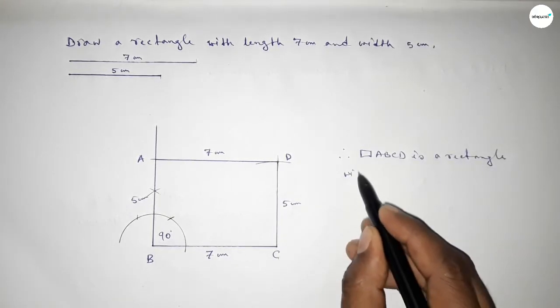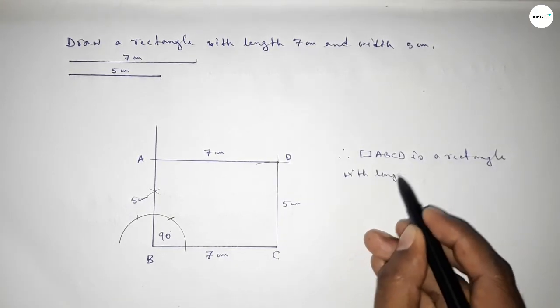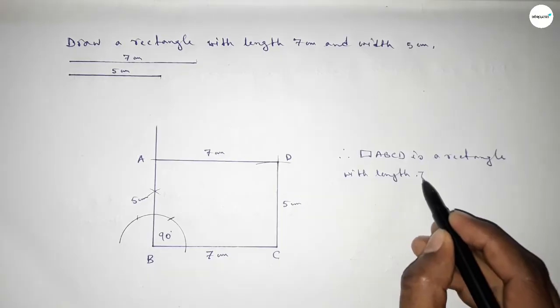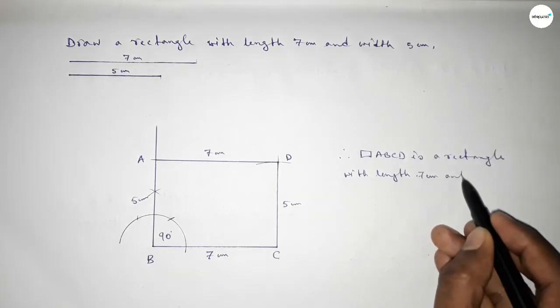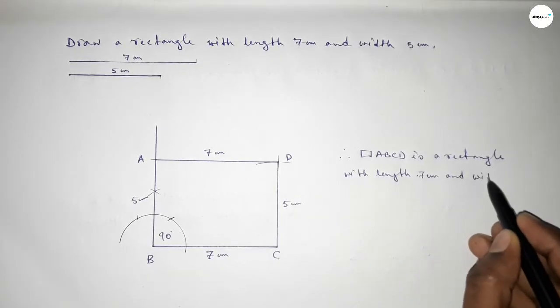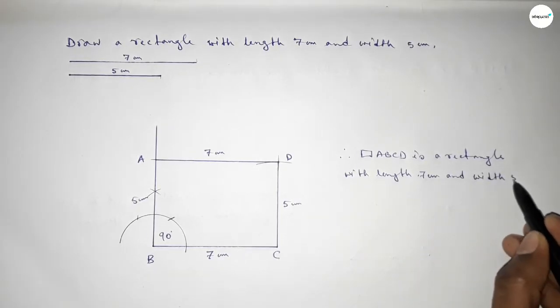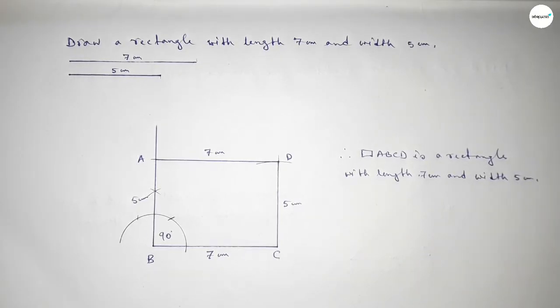Rectangle ABCD is a rectangle with length 7 centimeter and breadth or width 5 centimeter. That's all. Thanks for watching — if this video is helpful, please share it with your friends. Thanks for watching.